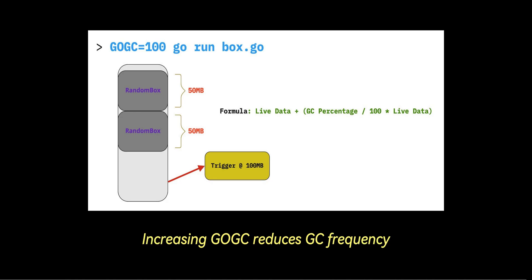Increasing GOGC reduces GC frequency, but increases memory usage, while lowering it does the opposite.